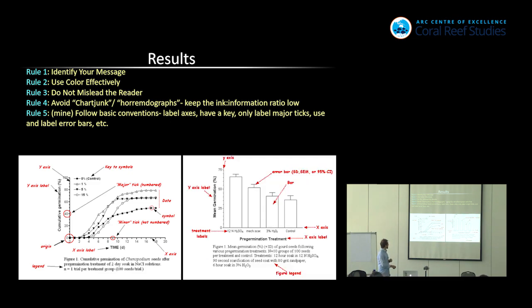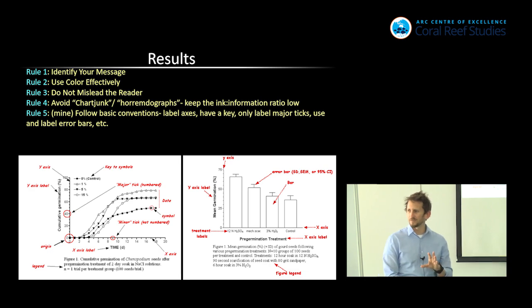And likewise, when you're doing a bar graph, same sort of thing. Label your axes. Tell what they are. Here's the treatment labels. This says what that x-axis label is. These are different ones. But you've got your error bar, and you say whether it's standard deviation, standard error of the mean, or 95% confidence interval. All of those bits should be in there.